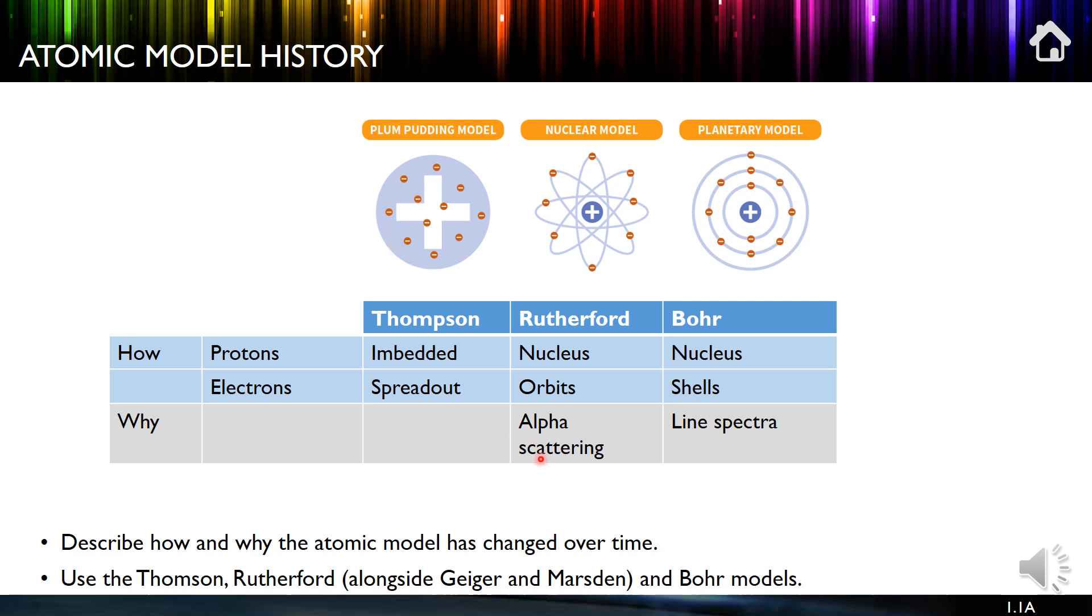Now because of the alpha scattering experiment, Rutherford, Ernst Rutherford, worked out that actually the mass was concentrated in the center and the electrons were around the outside. Further, a little bit later in the 1930s, Niels Bohr worked out that the electrons were actually in shells.